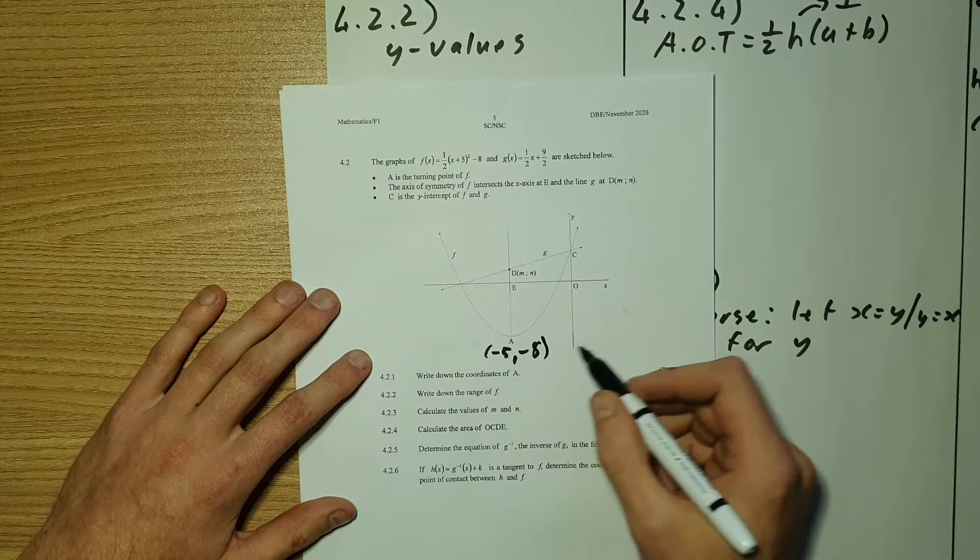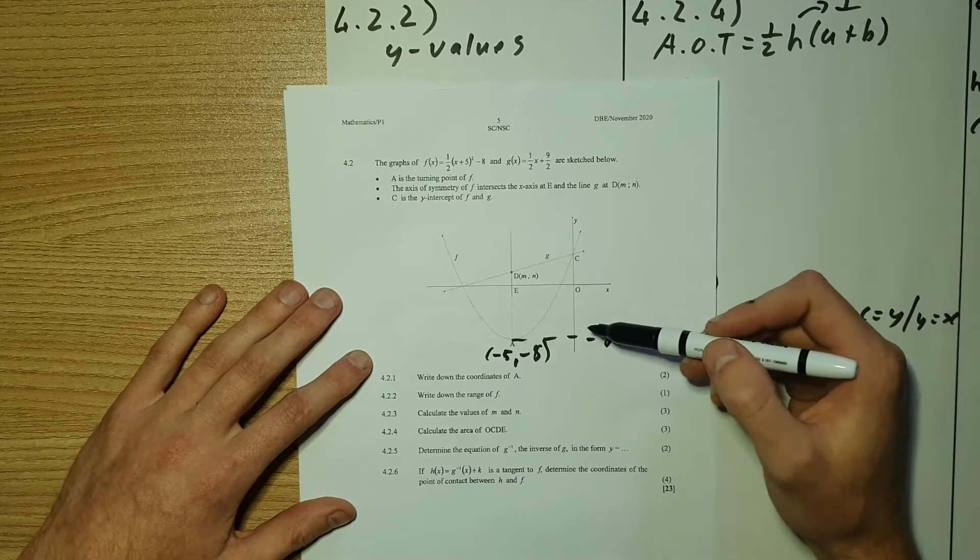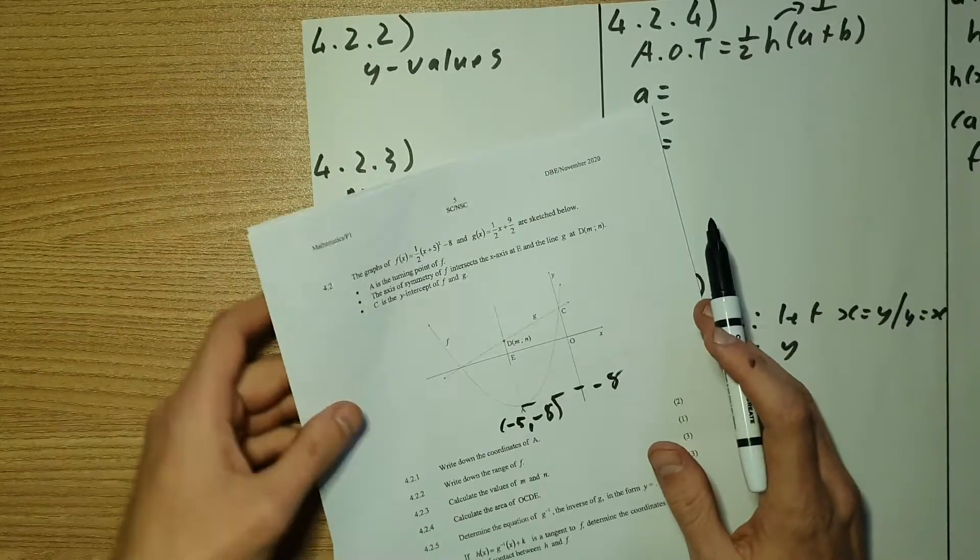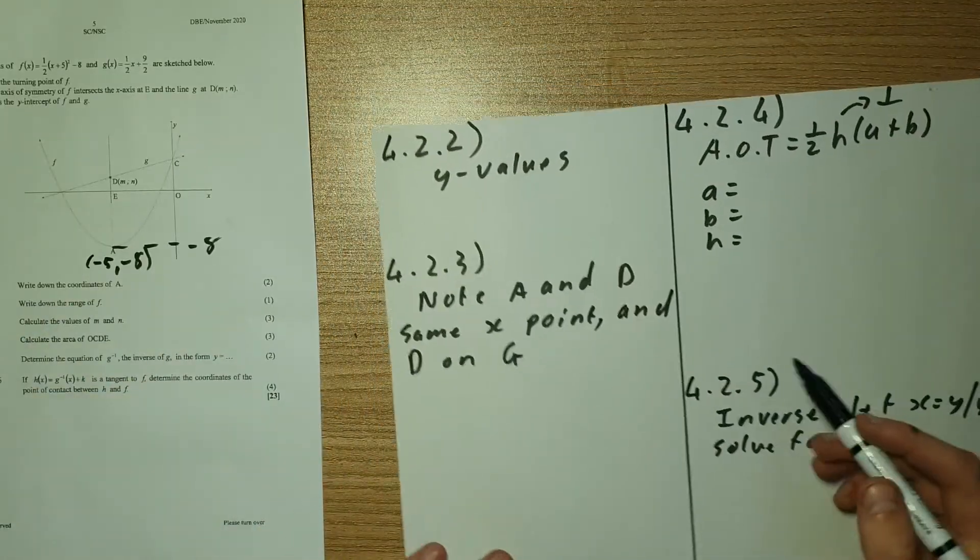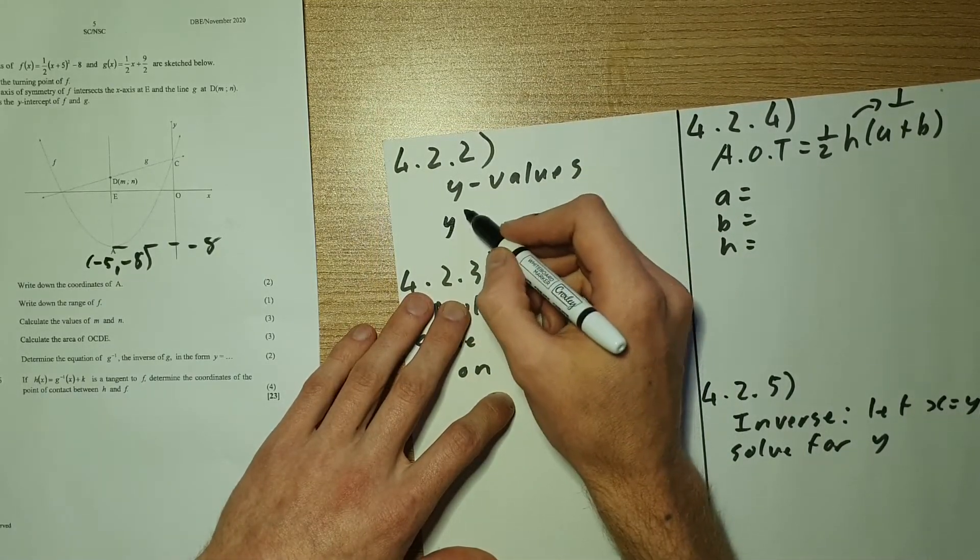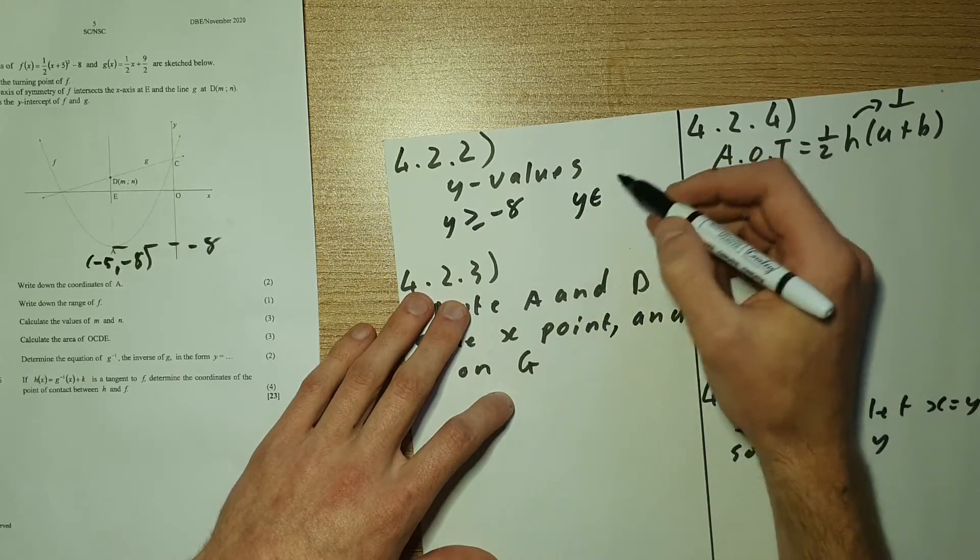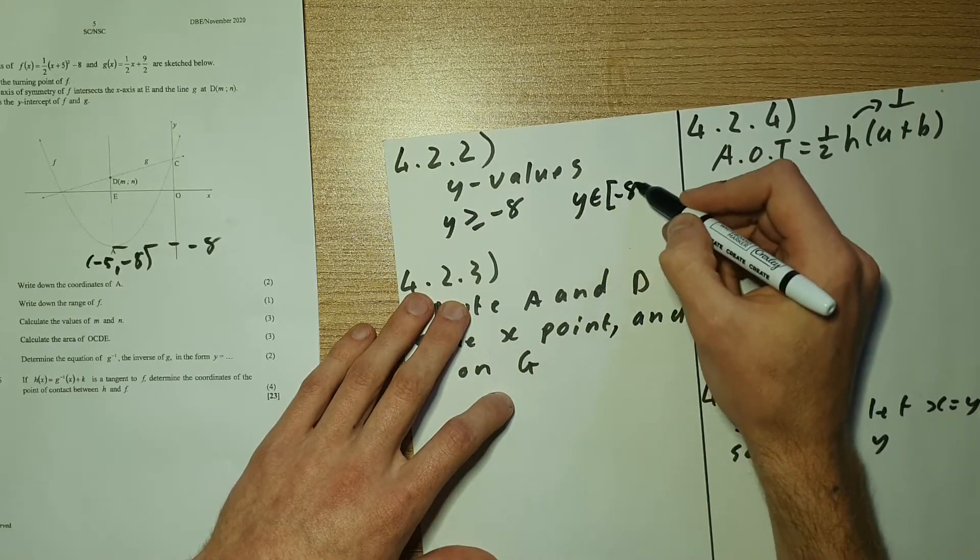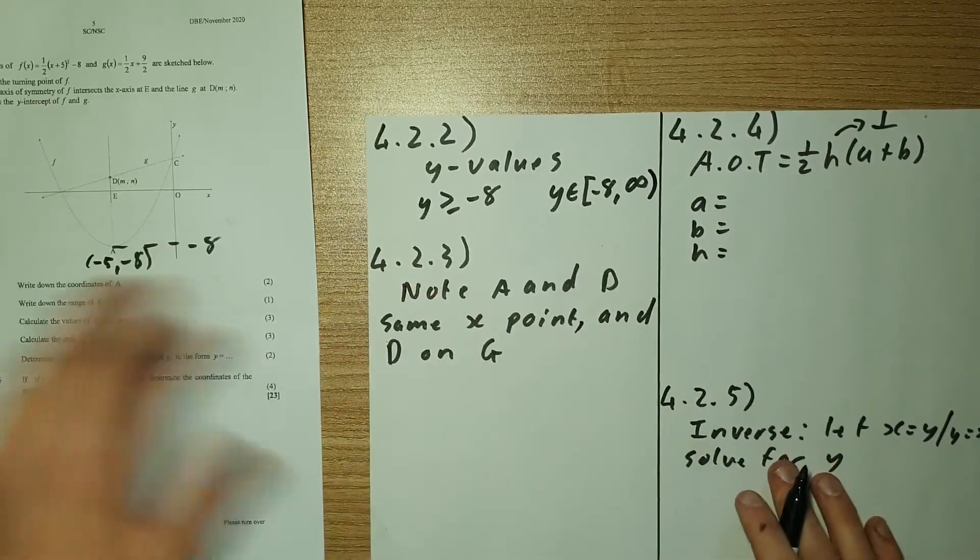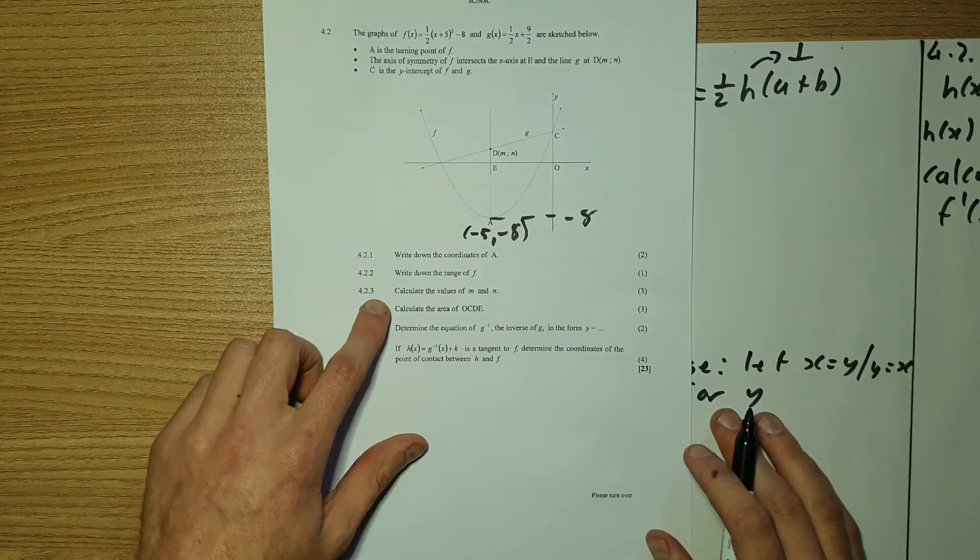So this here is negative 8. So can you see that all the values are valid from negative 8 to infinity? So you can write it in any way you want, but I prefer writing it y must be greater or equal to negative 8. Or you can say that y is an element including negative 8 to infinity. We never include infinity.